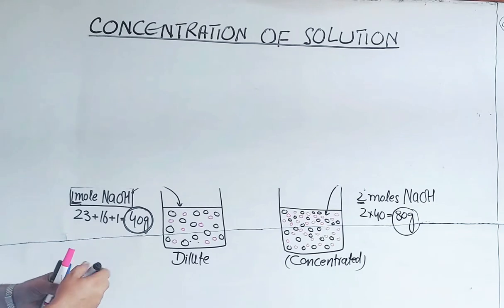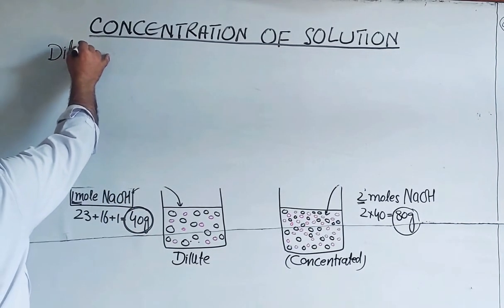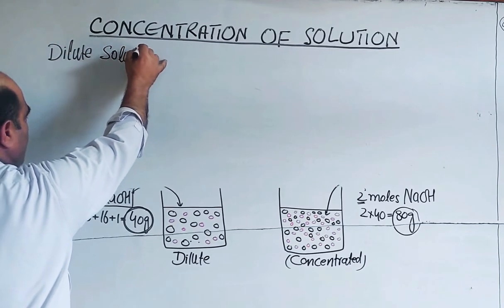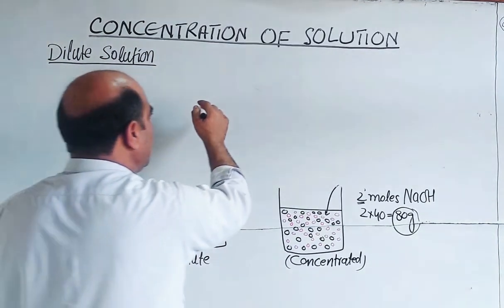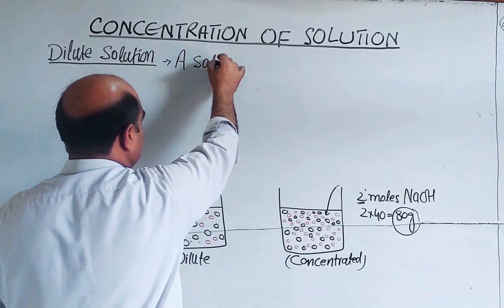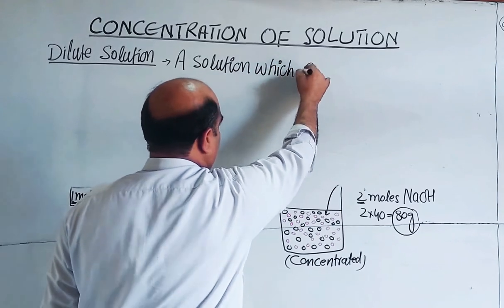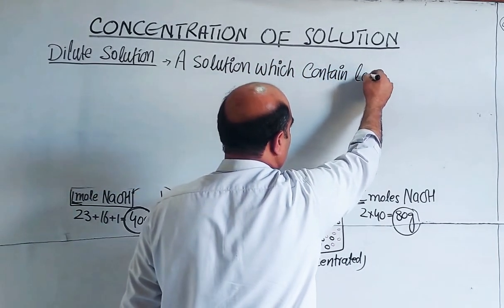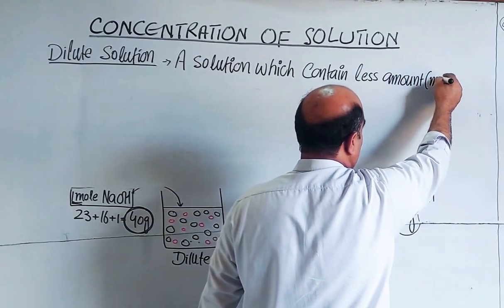Based on concentration, there are two types of solutions. The first one is dilute solution. A solution which contains less amount of solute — a solution which contains less number of moles of solute.